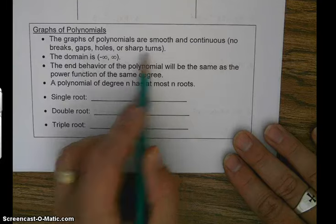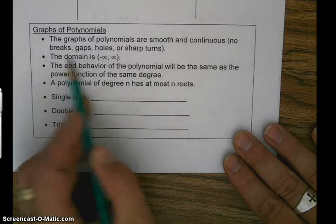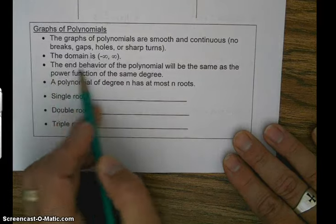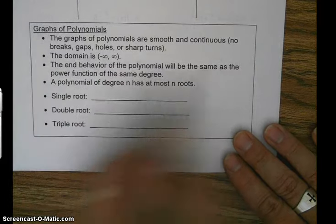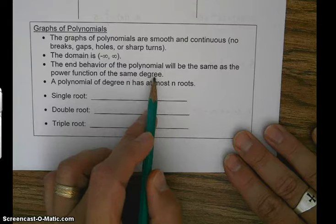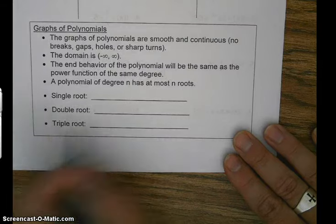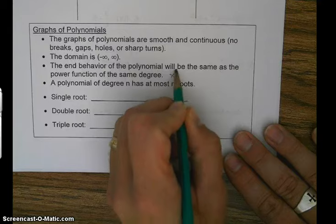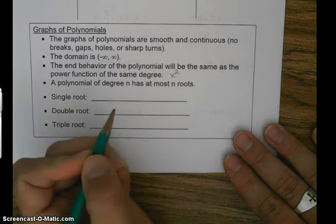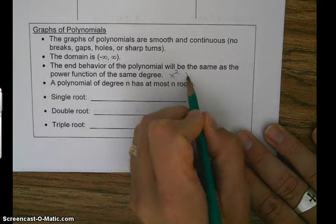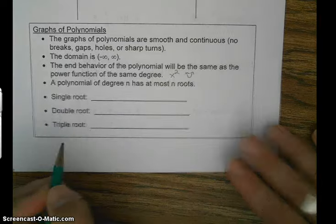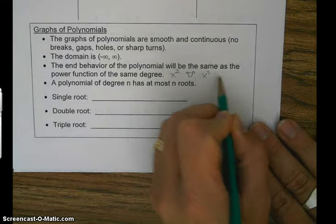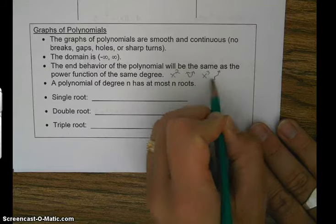So just keep that in mind. The domain is all real numbers. End behavior will be the same as the power function of the same degree. So remember, if it's even, it'll resemble a quadratic. And if it's odd, it'll resemble a cubic function.